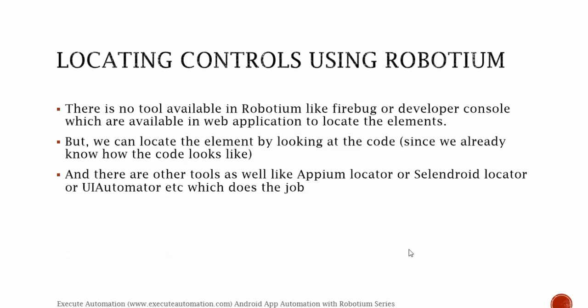So what do I really mean by locating controls using Robotium? The application which we are going to automate — the calculator application — we need to somehow locate the controls in the calculator so that we can work with them. There are no tools available in Robotium like Firebug or a developer console, which are available in web applications to locate elements.